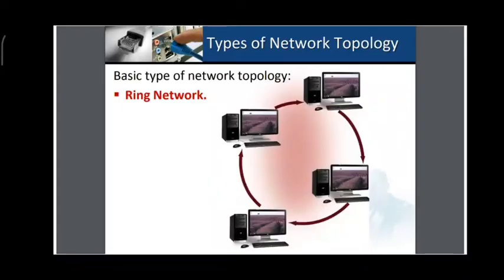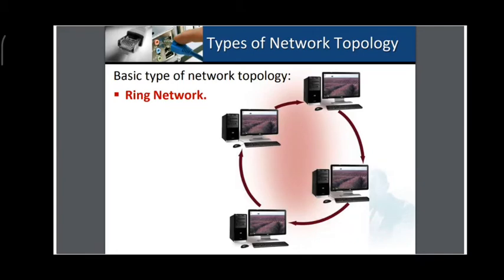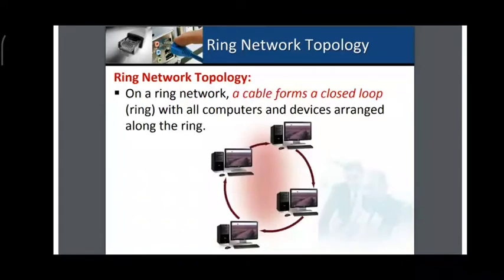The next type of network topology is the ring topology. As you can see, the layout of the computer network is in the form of a ring. On a ring network, a cable forms a closed loop or a ring, with all computers and devices arranged along the ring.